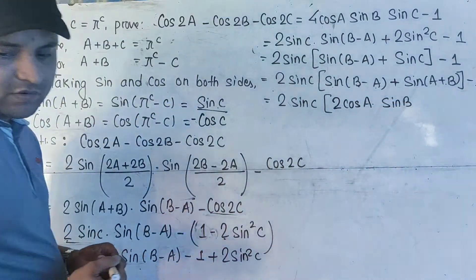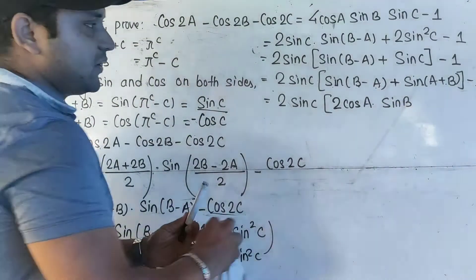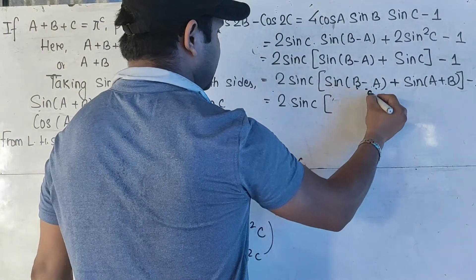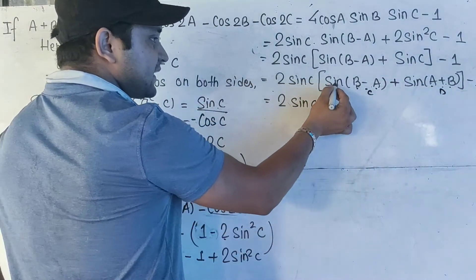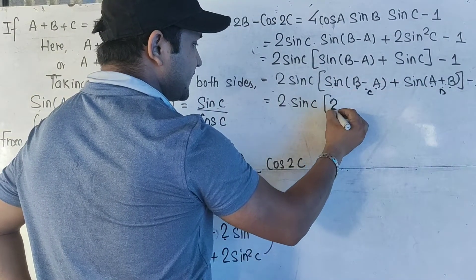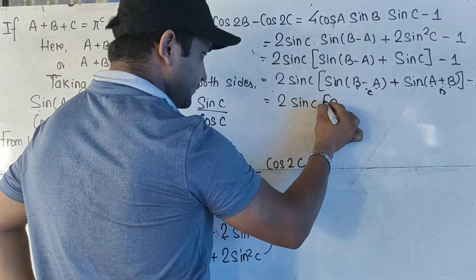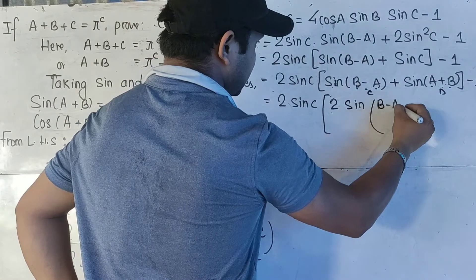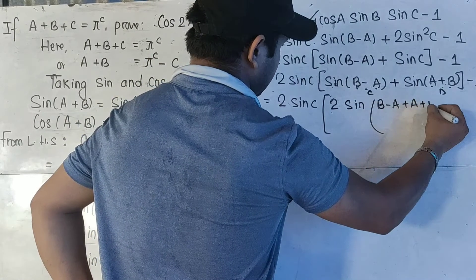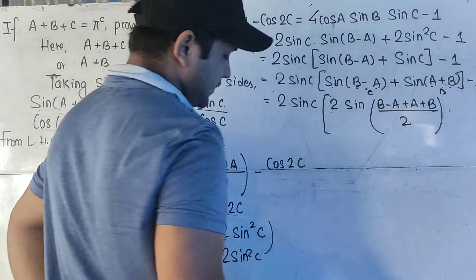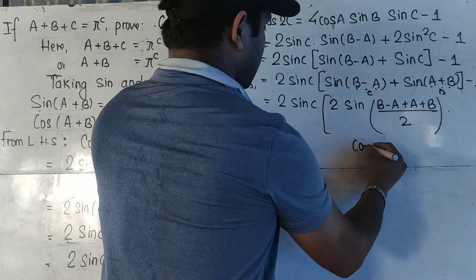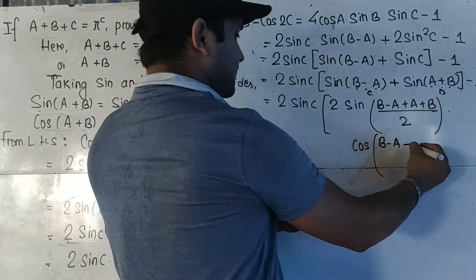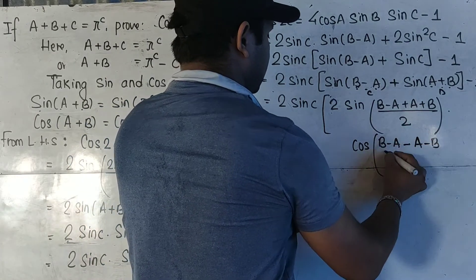Now if you are wondering how to simplify sin(a+b) plus sin(b minus a), what you can do is suppose (b minus a) to be C and (a+b) to be D. Now it becomes sinC plus sinD, and the formula for sinC plus sinD is 2·sin((C+D)/2)·cos((C minus D)/2).